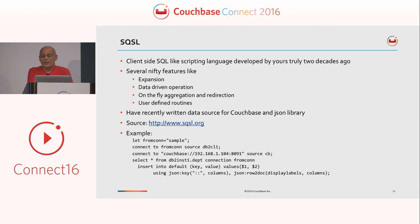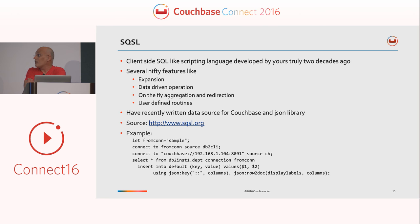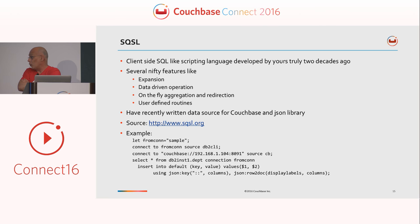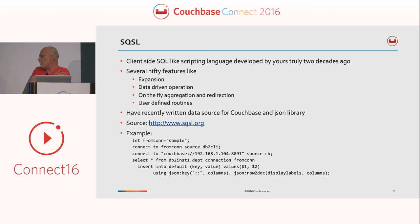Lastly, something written by yours truly about two decades ago. I wrote a client-side SQL-like scripting language with interesting things like expansions like in the Bourne shell, data-driven operation as in AWK, on-the-fly aggregation, and statement redirection. It struck me when I was hired by Couchbase that I could use this to move data. So I wrote a user-defined routine for a JSON library and a Couchbase driver. That gives you, roughly speaking, a working statement which will connect to DB2, connect to Couchbase, and you can do a select and redirect that select into an insert to Couchbase, using two functions to generate a document key from the column values and a document from the projection list and column values.